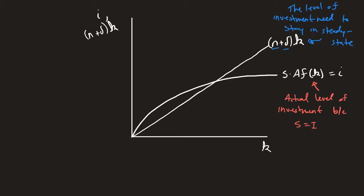So what we can assume and what we can know here is when the actual level is equal to the needed level, we will have what we call our k star. In this case, this is our steady state. This is our steady state of capital.